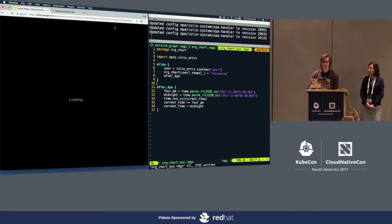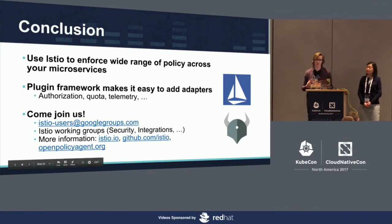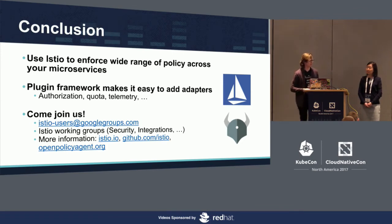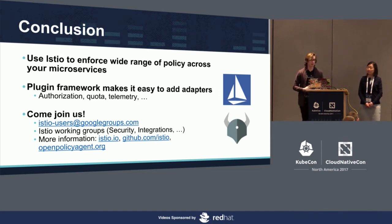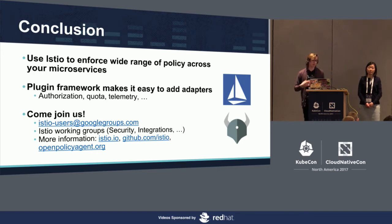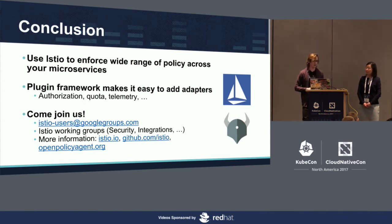OPA gives everybody a reusable building block to enforce all kinds of different policies across the stack. It's particularly useful for enforcing authorization decisions in microservices — it's not enough to just authenticate users, you need to control what those users can do. Istio has a fantastic plug-in framework that allows you to plug in things like OPA as well as other adapters for authorization, quota, and telemetry. The plug-in framework makes it pretty easy to get up and running, and the documentation is great. If you're interested in security and Istio, please join the security SIG and check out the projects on GitHub.